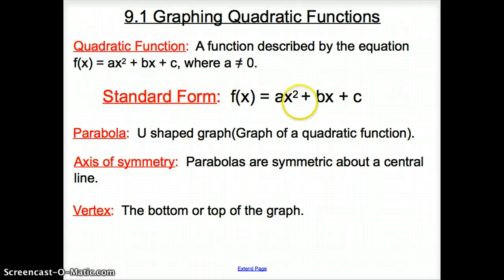Standard form, this is very important. Standard form is ax² + bx + c. We'll touch on that more on the next slide. Parabola is a u-shaped graph. It is a graph of a quadratic function. Axis of symmetry: Parabolas are symmetric about a central line, and what that means, you will be able to reflect over that axis of symmetry. And the vertex is the very top, or the very bottom, of a parabola.